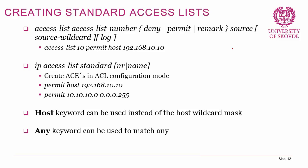To create a standard access list, the command is in global configuration mode: 'access-list [number] [deny|permit|remark] [source] [wildcard]'. For example: 'access-list 10 permit host 192.168.10.10'. The keyword 'host' replaces the all-zeros wildcard mask. There's also the keyword 'any', so 'access-list 10 permit any' would permit all traffic — useful when you want to override the implicit deny at the end.